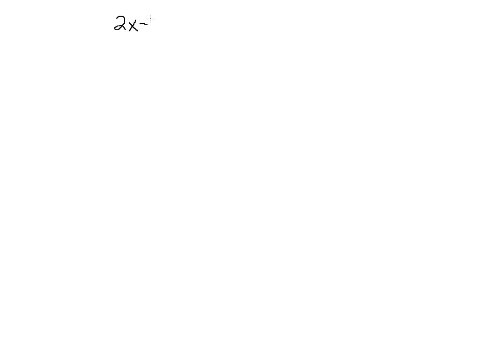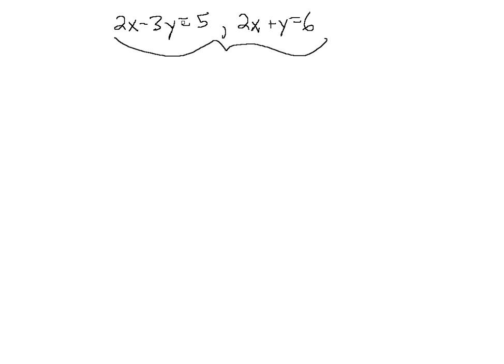We're continuing to solve linear systems using elimination, so let's take a look at the next one. We have the system of equations 2x minus 3y equals 5, and 2x plus y equals 6. Using the elimination method, we need one equation to have a coefficient of a variable that is the opposite of the coefficient of the variable in the second equation, or vice versa.